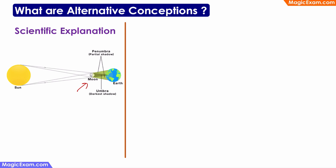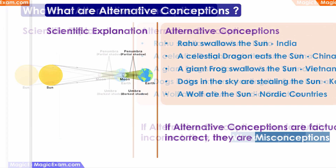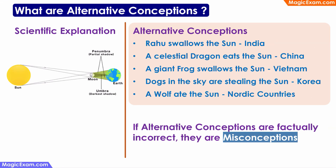However, if you look at how this has been explained historically in different countries: in India we say a demon called Rahu has swallowed the sun; in China they say a celestial dragon eats the sun; in Vietnam they say a giant frog swallows the sun; in Korea they say there are some dogs in the sky stealing the sun; and in the Nordic countries they say a wolf ate the sun.